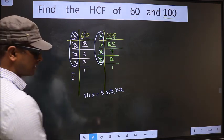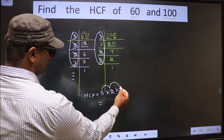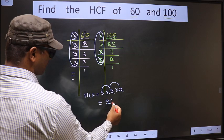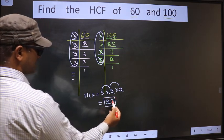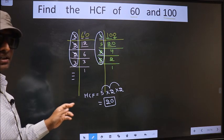So, our HCF is 5 into 2, 10 into 2, 20. So, 20 is our HCF. Am I clear?